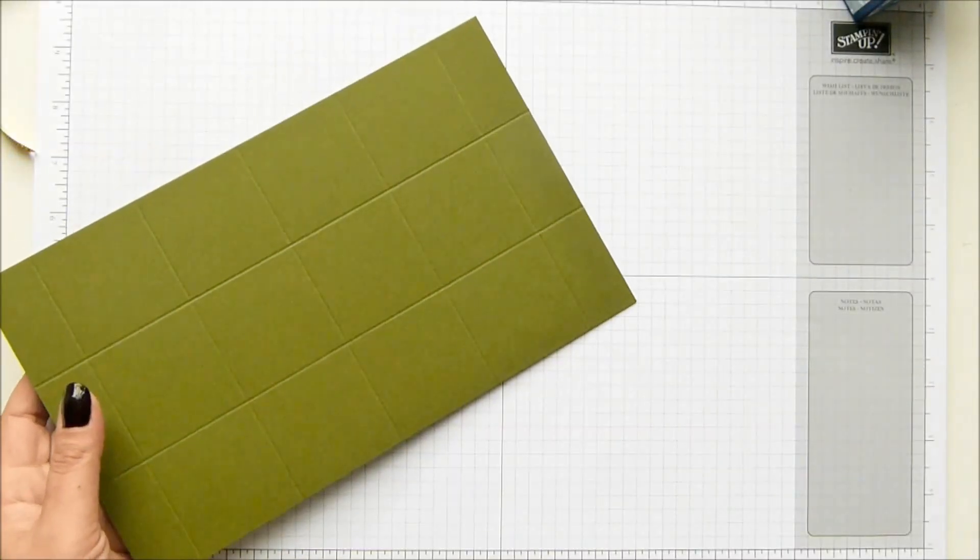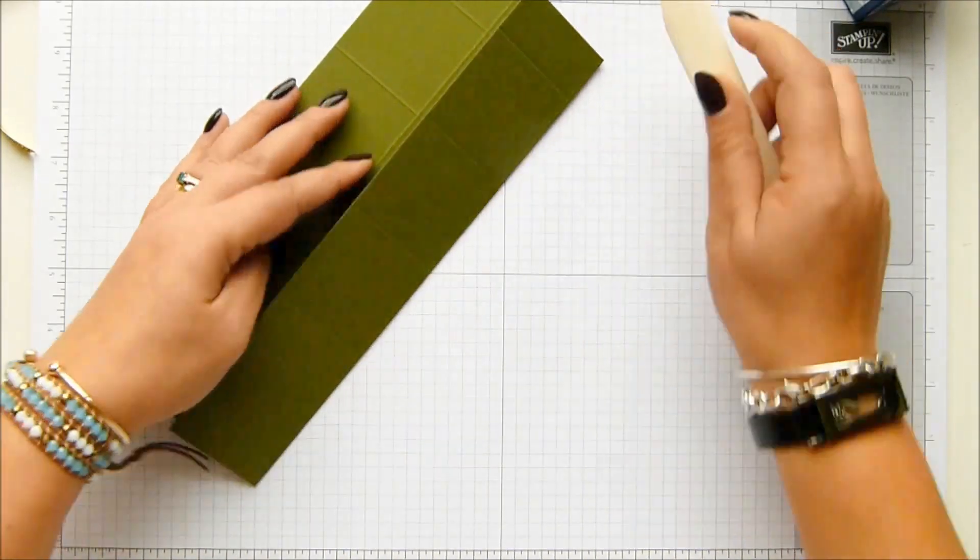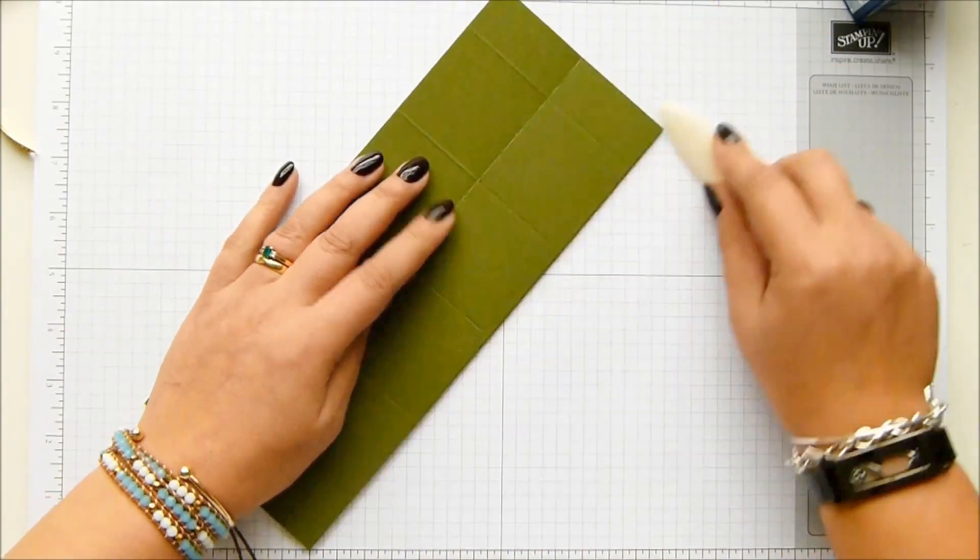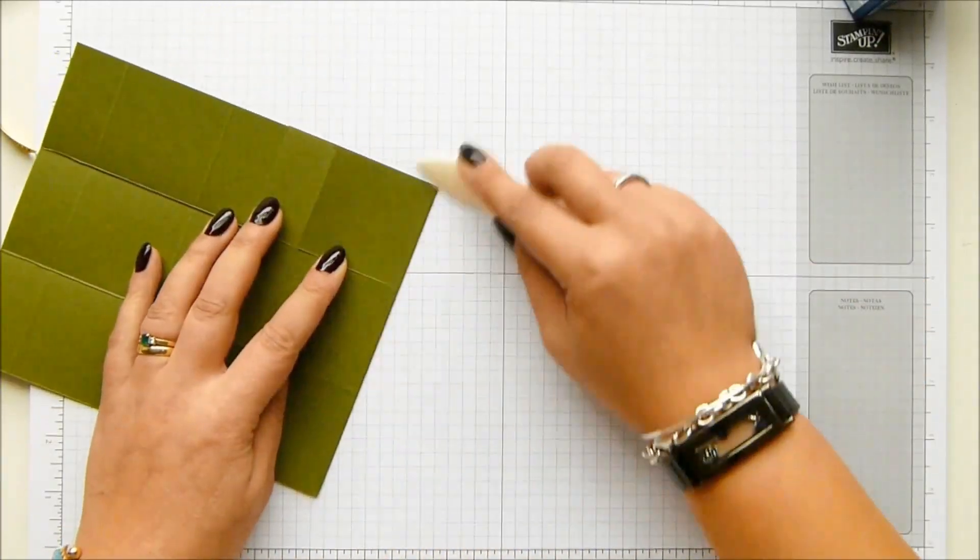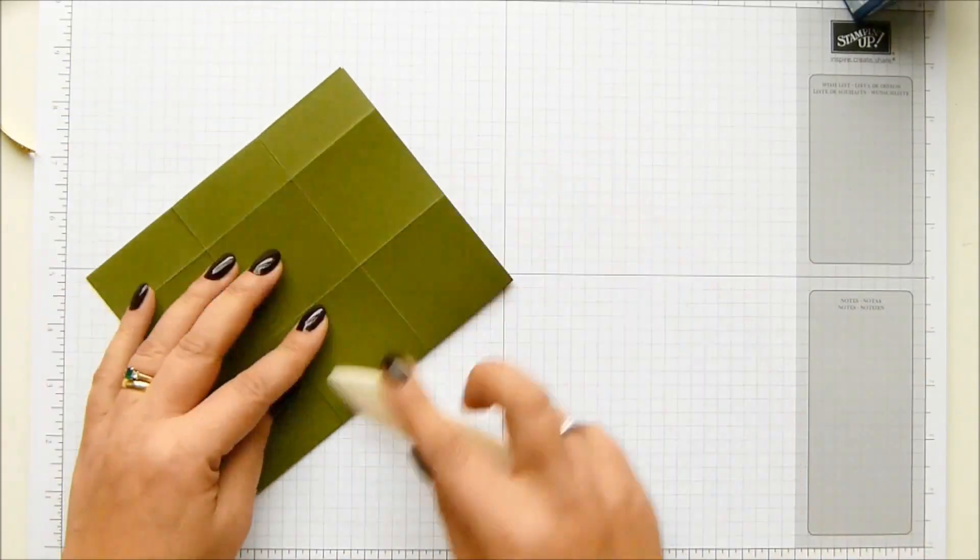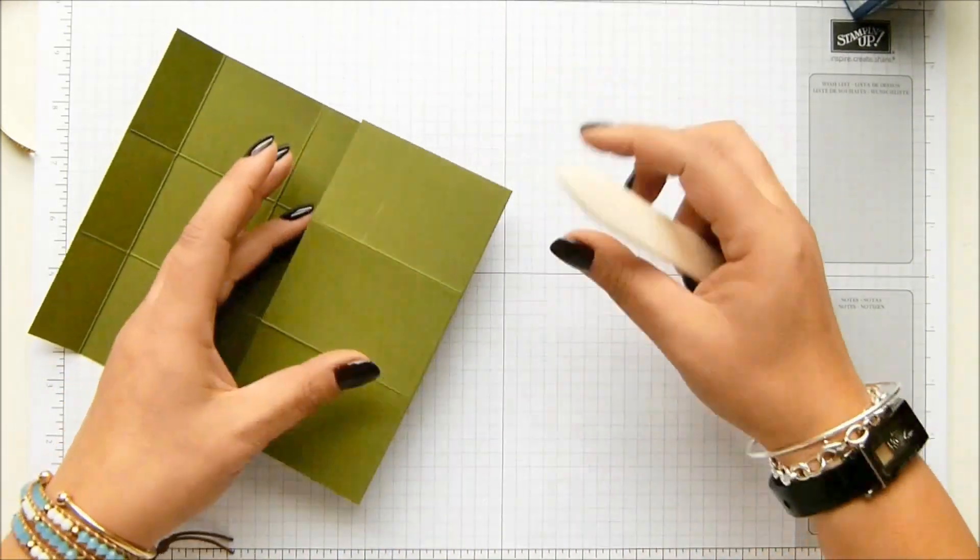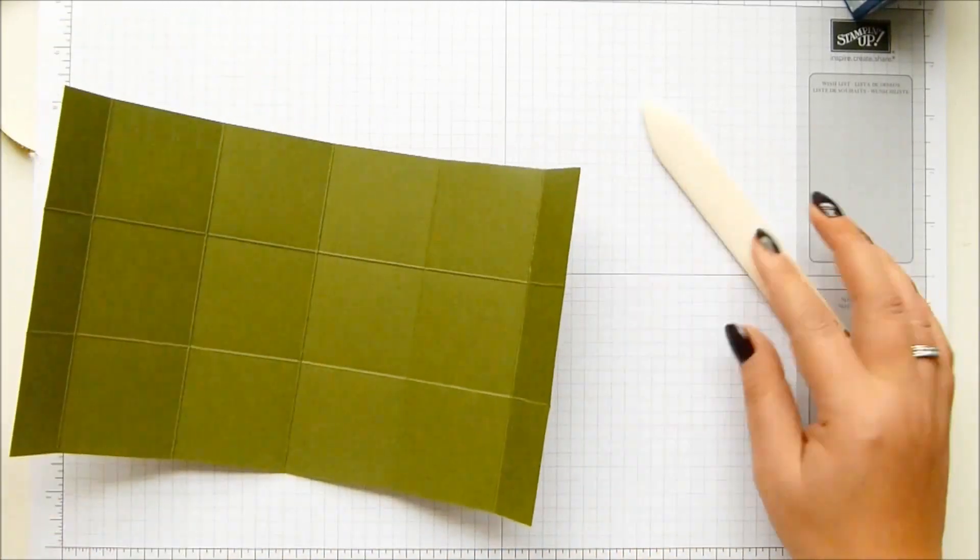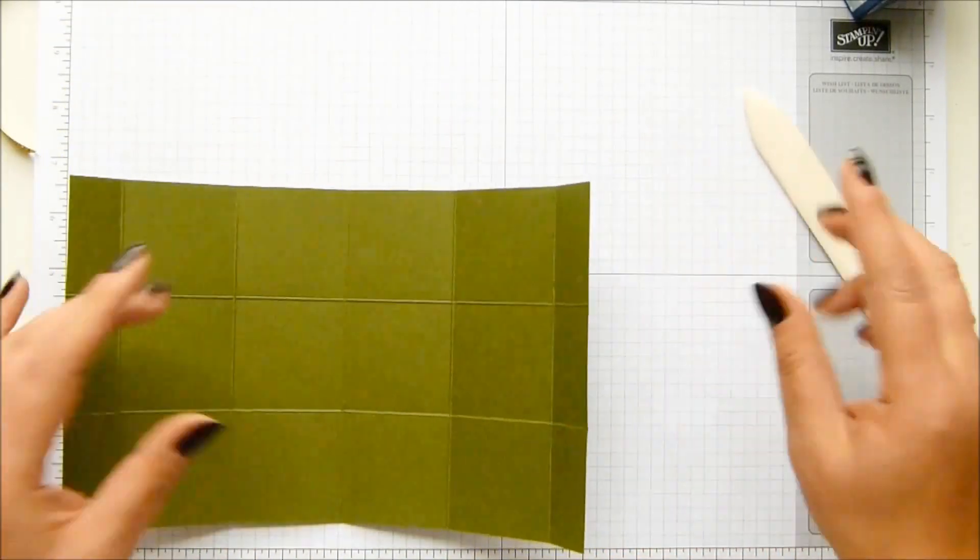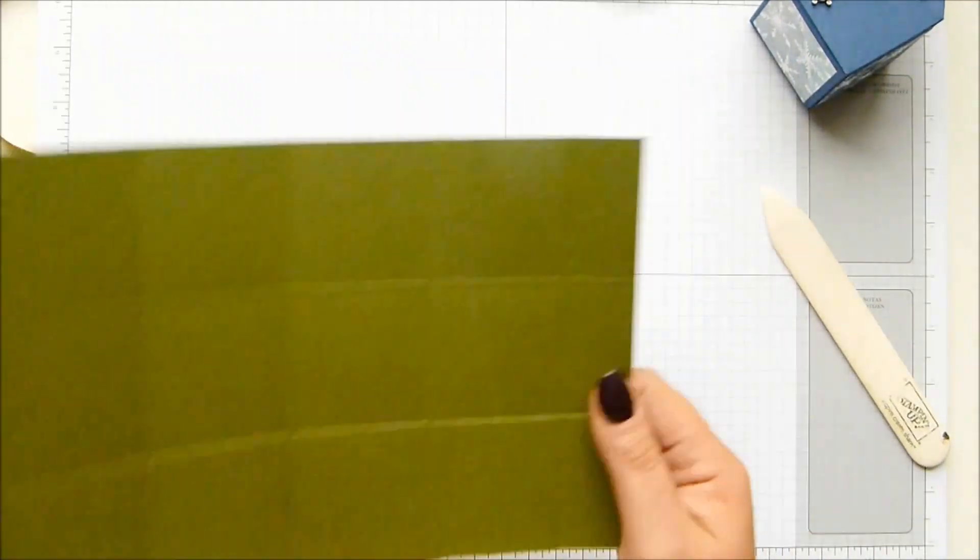So come along and fold and burnish all the score lines. We are going to make this in exactly the same way as before but obviously a different closure. I like to bend pieces of paper, that's what I do. I bend and fold and manipulate and see what I can do and that's how I came up with this that looks so different to the washi box, but we're going to cut it in exactly the same way.